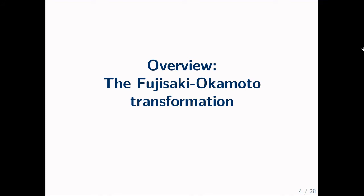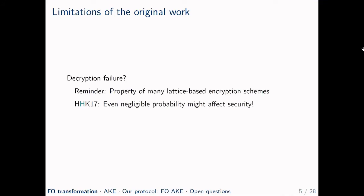As a warm-up, I'll do a quick recap of the Fujisaki-Okamoto transformation. The original work was found to have limitations for post-quantum security, inspiring a lot of follow-up research. The first limitation is that the original work required the underlying scheme to be perfectly correct — that is, encrypting and then decrypting always results in the original message. But many lattice-based encryption schemes proposed for the NIST competition actually come with a probability of decryption failure. Known examples are Kyber, Frodo, and New Hope. We found in 2017 that even a negligible probability of decryption failure might affect the security level.